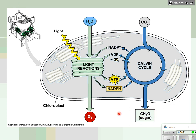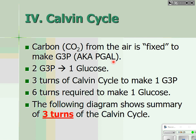Carbon from the air in the form of carbon dioxide is going to be fixed to make a three-carbon sugar called G3P — another name for it is PGAL. It takes two molecules of G3P to make glucose, which is why we think of glucose as the product of photosynthesis. Glucose can be converted into other sugars, stored as starch, or converted into cellulose to build cell walls.